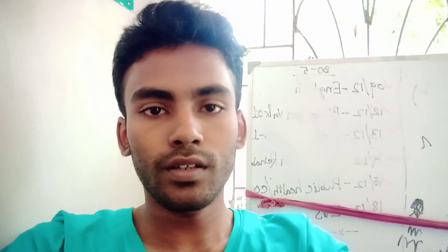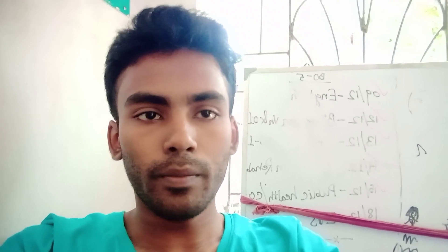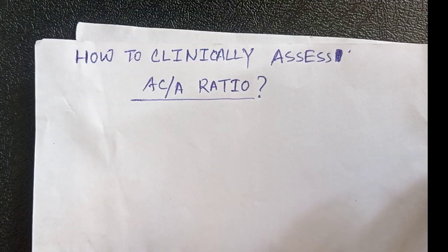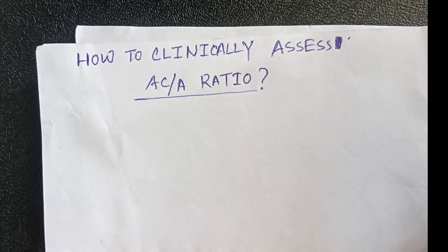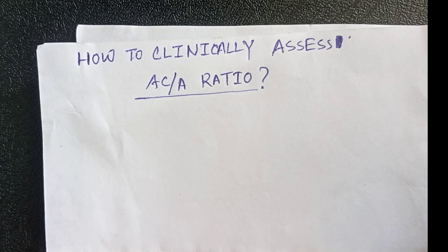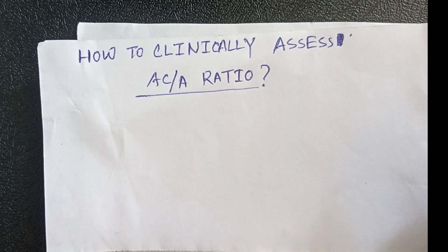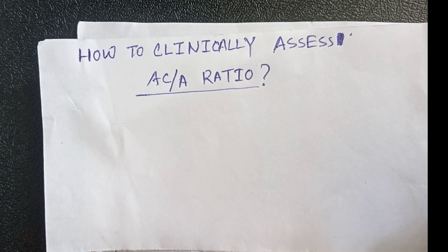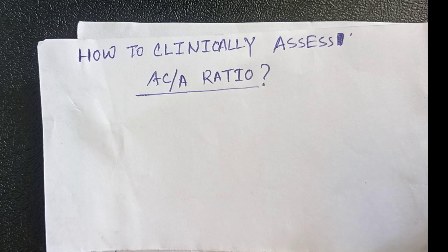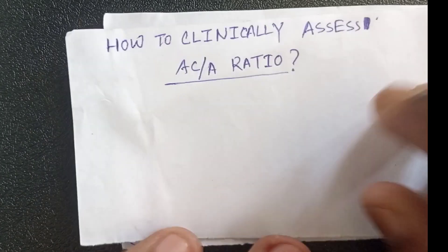Good morning. Today I will discuss the topic of AC/A ratio in binocular vision. Let's start — how to clinically assess the AC/A ratio. AC/A ratio stands for accommodative convergence versus accommodation ratio, and this is one of the important clinical investigations in NSBD, meaning non-strabismic binocular dysfunction examination.